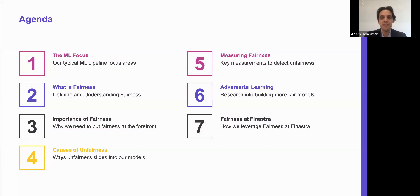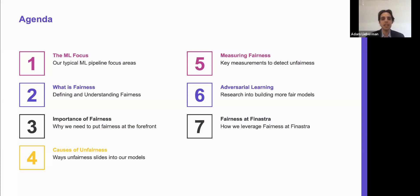Our agenda today will consist of seven sections. We will start with the typical machine learning focus and identify areas where algorithmic fairness should come into play. We will then narrow into fairness, define it, and better understand what it is. We will discuss why it's important from an algorithmic perspective and identify ways bias can slide into our models. Next, we'll discuss a few ways we can measure fairness. We'll follow up with some of the latest research around adversarial learning, which leverages deep learning to help build more fair models. And finally, we'll discuss what we at Finastra are doing with algorithmic fairness.